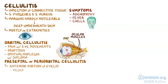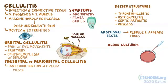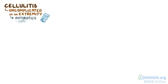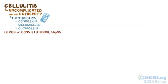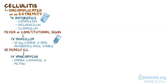Cellulitis can also be worrisome if it extends into deeper structures, leading to thrombophlebitis, osteomyelitis, and septic arthritis, as well as development of an abscess. Additional tests are recommended when the individual is febrile and appears toxic. Blood cultures should be performed to identify the bacteria and bacteremia. Usually uncomplicated cellulitis on an extremity is managed with outpatient antibiotics like cefalexin, dicloxacillin, or cloxacillin. If fever, lymphadenopathy, or constitutional signs are present, then IV oxacillin can be initiated with a plan to complete a 10-day course of oral antibiotics once the individual is stable. If the individual looks severely ill, then IV vancomycin can be given to offer empiric coverage of methicillin-resistant S. aureus. If there is an abscess, it may require surgical drainage.